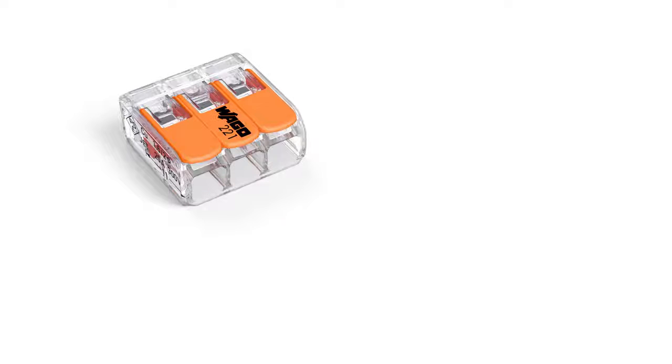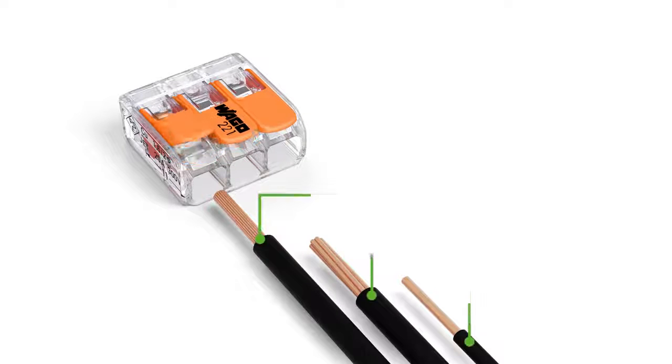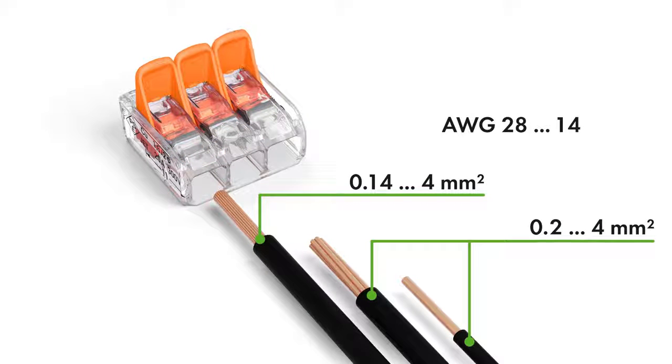The compact splicing connectors for all conductor types feature a large connection range: 0.14 to 4 square millimeters fine-stranded and 0.2 to 4 square millimeters solid and stranded, 28 to 14 AWG.